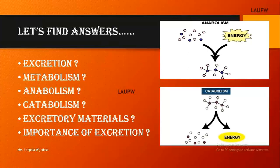Excretory materials are the waste products that are produced during metabolic processes. Excretion becomes very important because it helps to maintain the internal environment at an optimal level. It helps to regulate blood pressure, volume of blood, as well as blood pH value. This prevents damage to the body because of chemical imbalance.